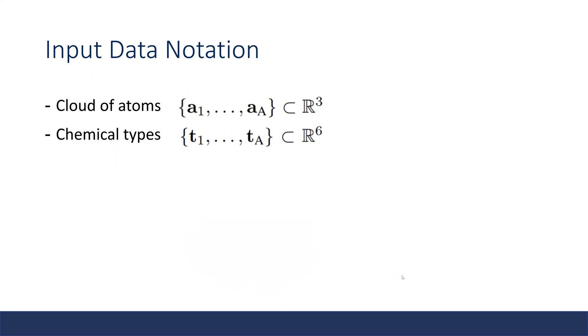Here is the input data. We have a cloud of atoms and each atom has their chemical types. There are six types of atoms and the type is encoded in a one-hot vector.